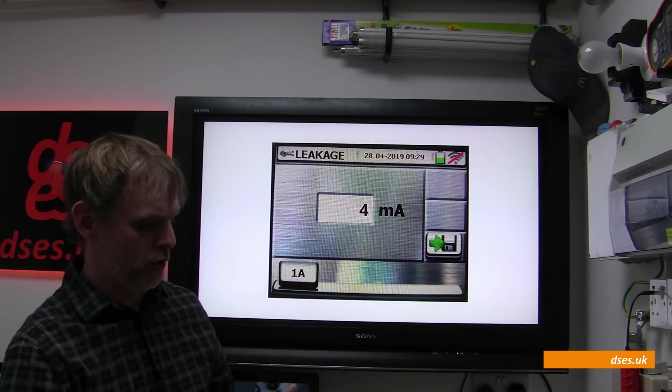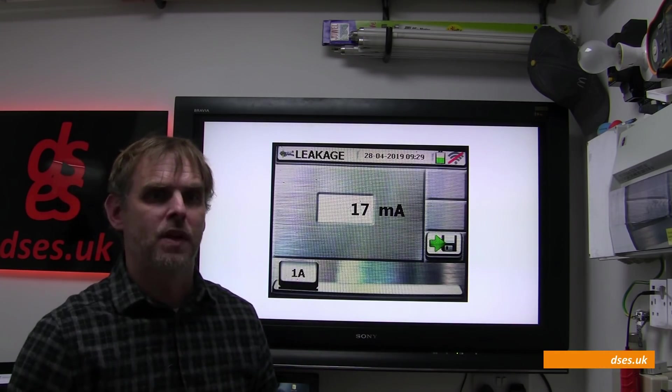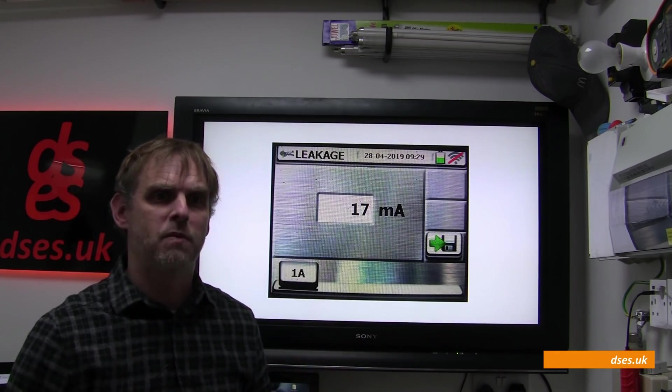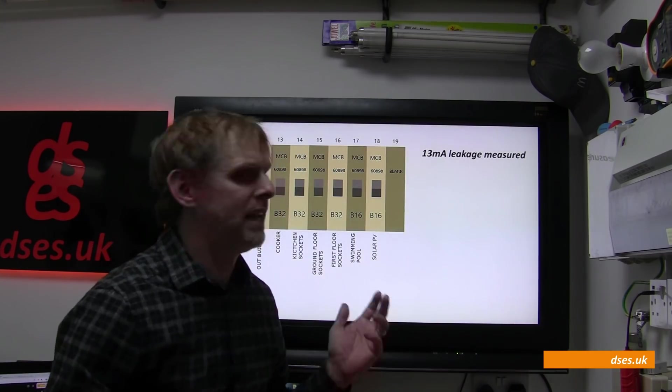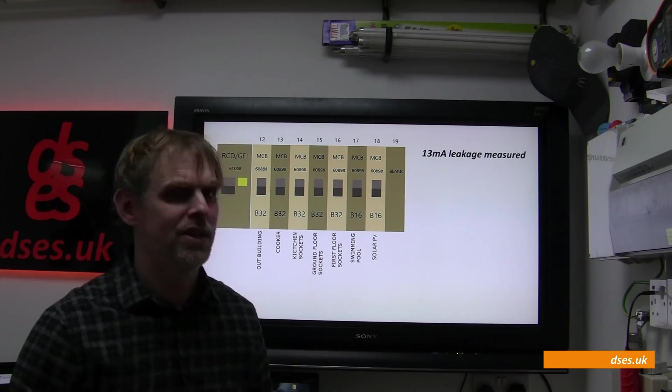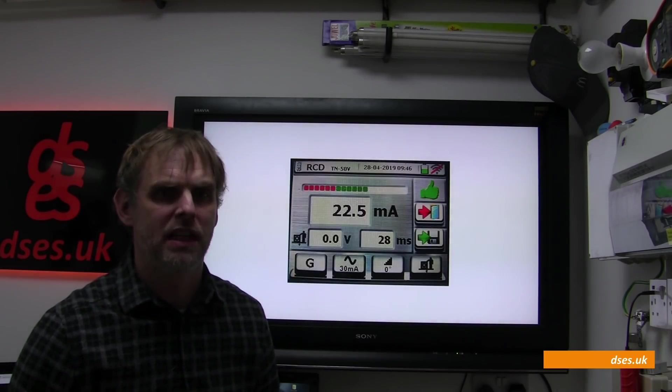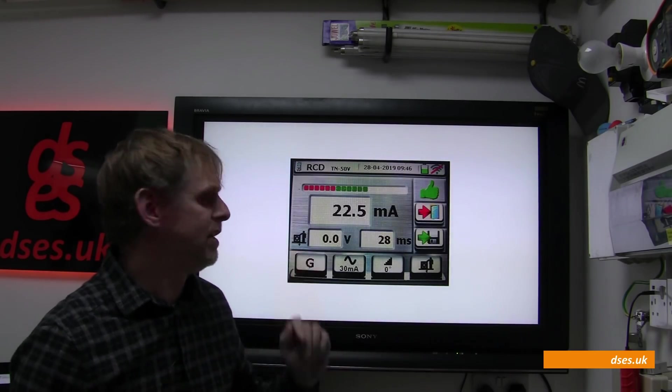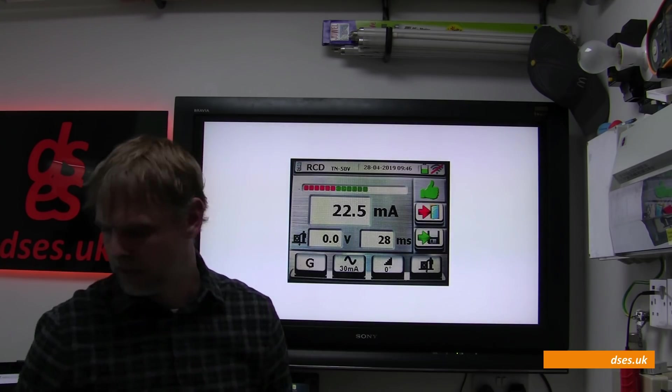With the RCD side of the board then all switched back on, we saw the earth leakage jump up to 17 milliamps. So if we take off the four milliamps measured earlier, then that leaves 13 milliamps of leakage current currently coming from the RCD protected circuits. Next we power down all but one of these circuits verified it wasn't adding anything to the earth leakage current, and we ramp tested the RCD where we observed it tripping at 22.5 milliamps.